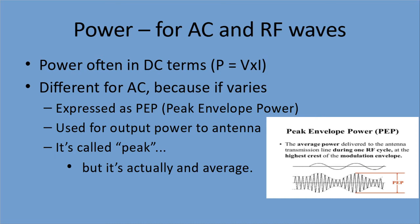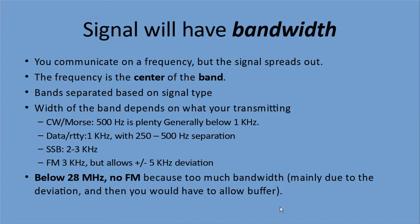It's called peak, but it's actually an average. It's based on the highest crest, as you can see in the picture on the right. Our power can vary as we're transmitting, so it's called peak because it's the average at the point where we have peak power. Our signal is going to have bandwidth — we're going to use a small frequency range within the band. You're communicating on a frequency, but the signal spreads out a bit. The frequency we're transmitting on is the center of the band, and bands are separated based on the signal type or the type of transmission we're sending.